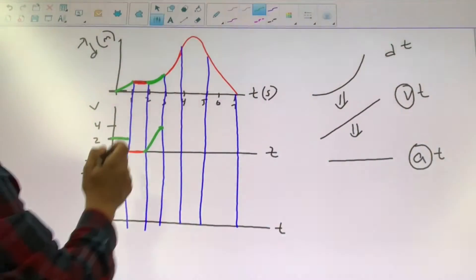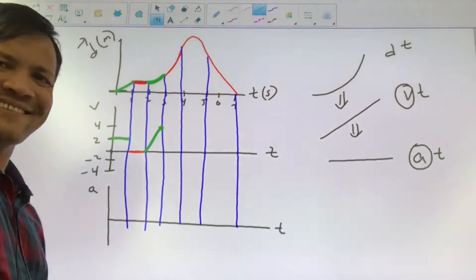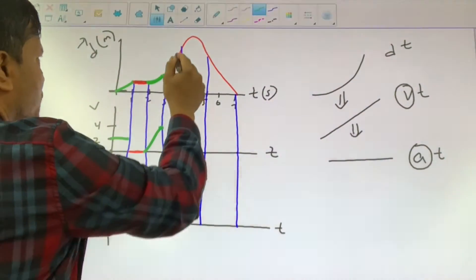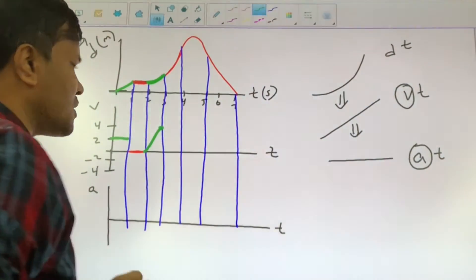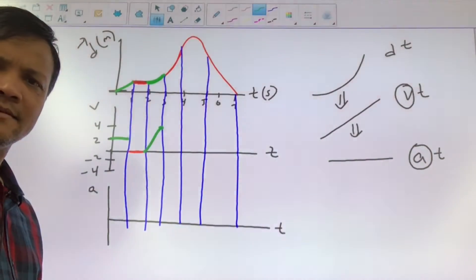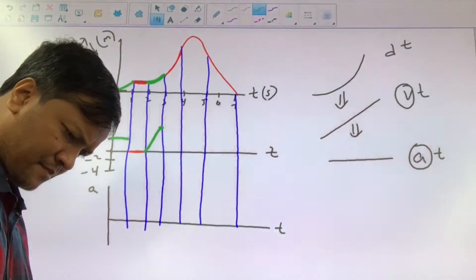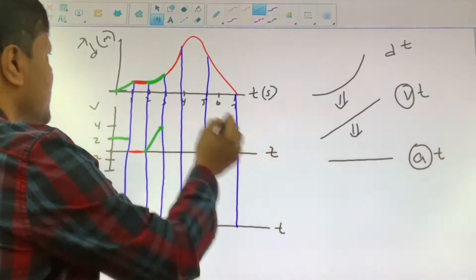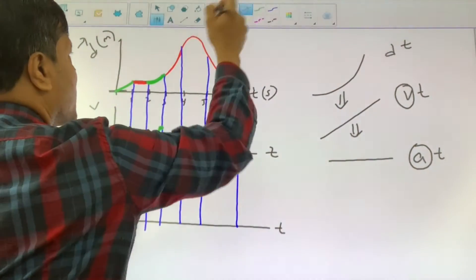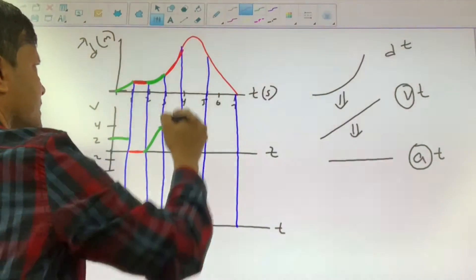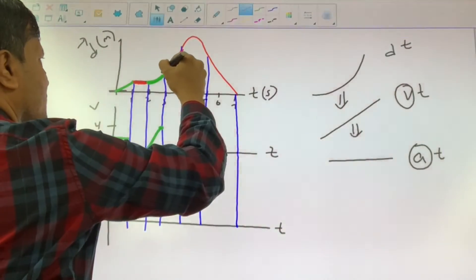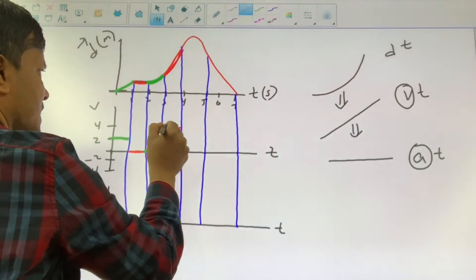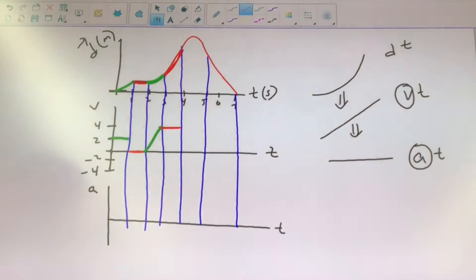So the object from 2 to 3 seconds accelerates. From 3 to 4 seconds the object changes position but with constant velocity. The slope looks like 4 meters per second. So 4 meters per second constant velocity from 3 to 4 seconds.